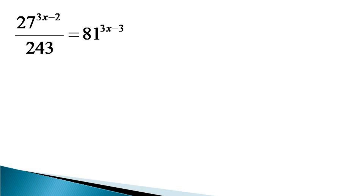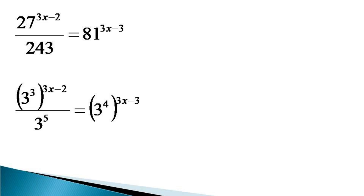So the equation transforms to 3 raised to the power 3, whole raised to the power 3x minus 2, divided by 3 raised to the power 5, equal to 3 raised to the power 4, whole raised to the power 3x minus 3.